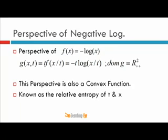Since negative log x is convex, its perspective function is also convex. Therefore, negative t times log(x/t) is a convex function. This term, negative t times log(x/t), is known as the relative entropy of variables x and t.